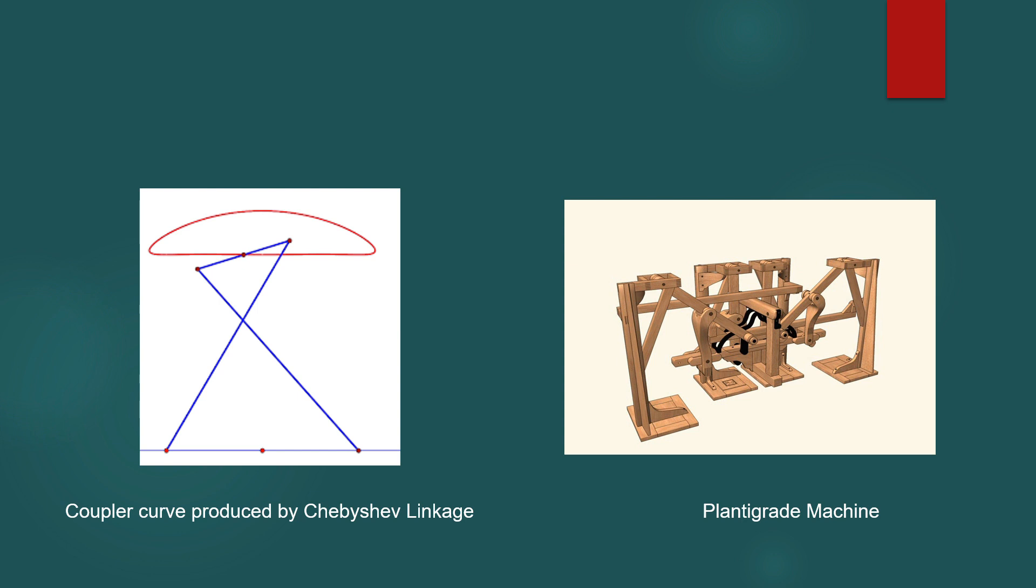Thus, a two- or four-leg walking mechanism can be synthesized using Chebyshev linkage. Plantigrade machine which was first designed by Chebyshev using the same principle is shown in the figure.